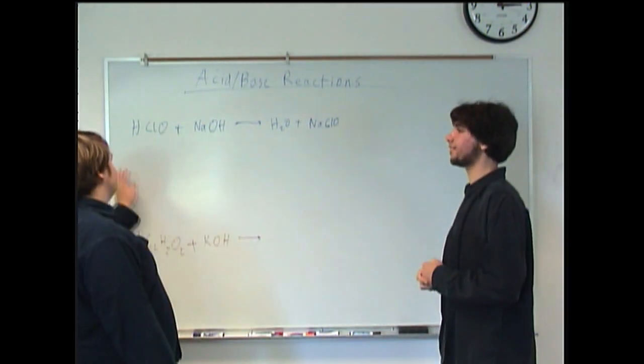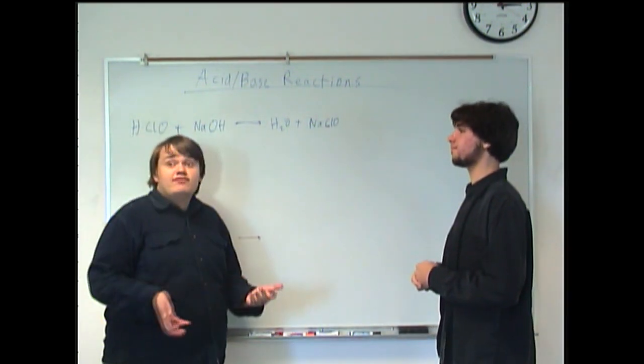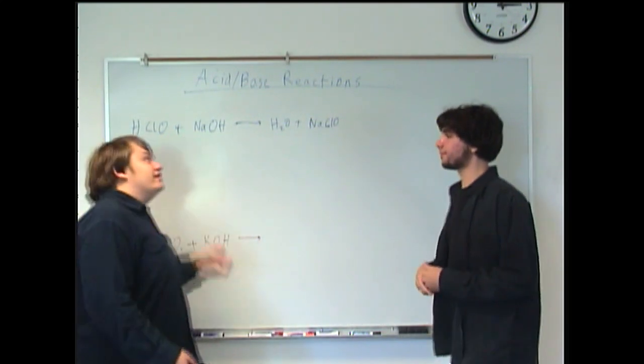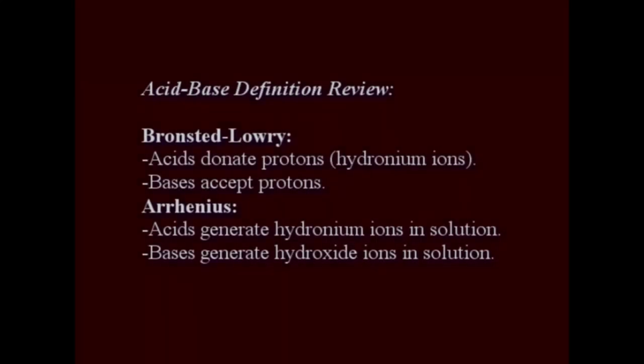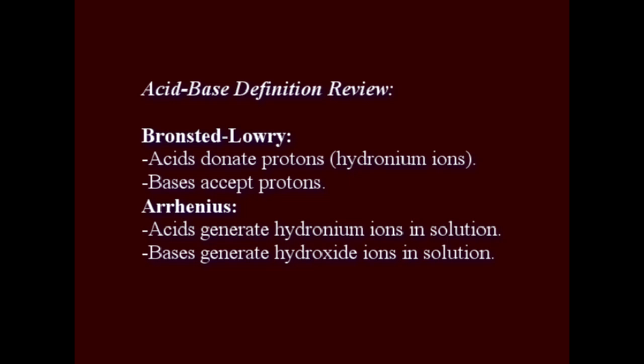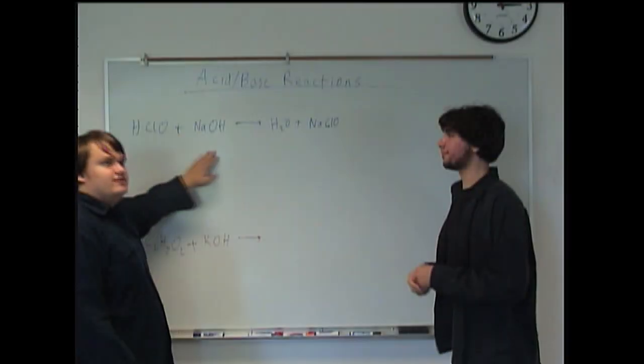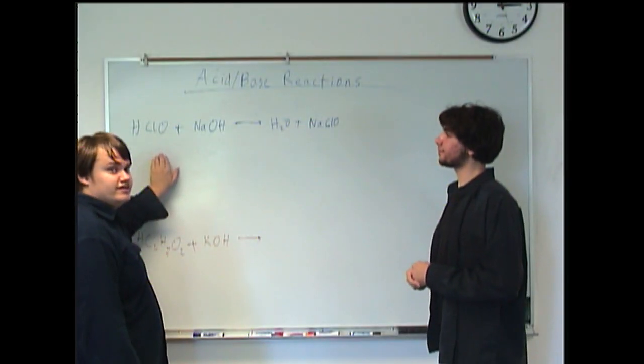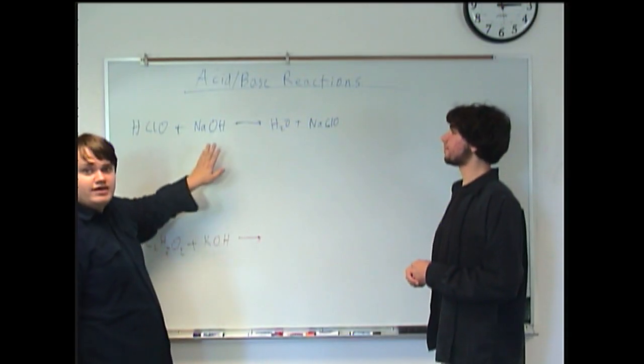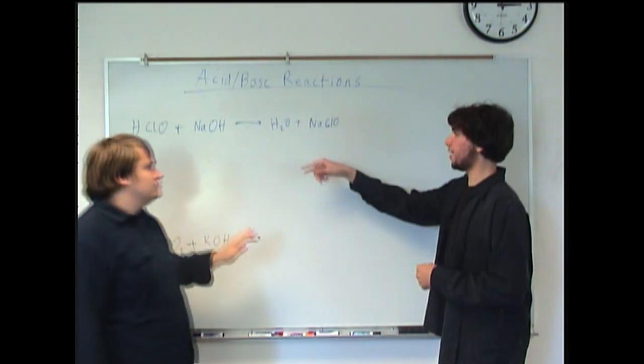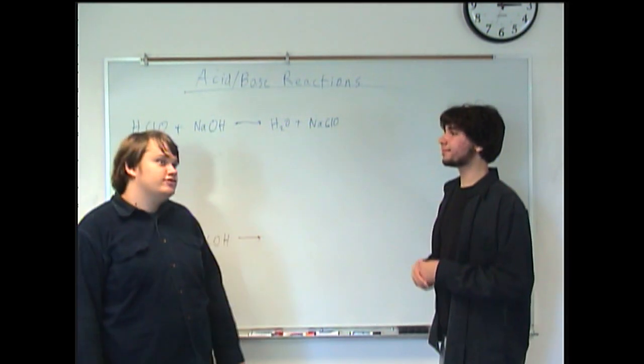Now, as you can see, to have an acid-base reaction, we need an acid and a base. In this case, we have hypochlorous acid and we have sodium hydroxide. Getting a splatter, and? Bleach. Yes, or sodium hypochlorite.